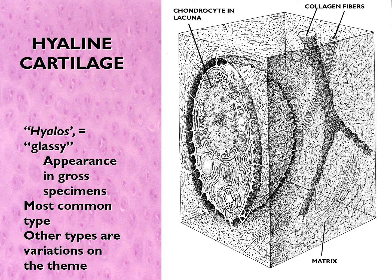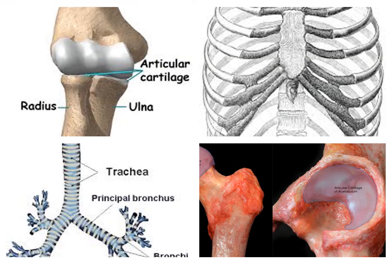The first type is hyaline cartilage, called 'hyaline' or 'glassy' because in specimens it appears clear as glass. Hyaline cartilage is found at articular surfaces, in the bony thorax — the cartilaginous part of the ribs — and in the trachea, where it forms C-shaped cartilage. In the bronchi, there is a complete circle of hyaline cartilage.